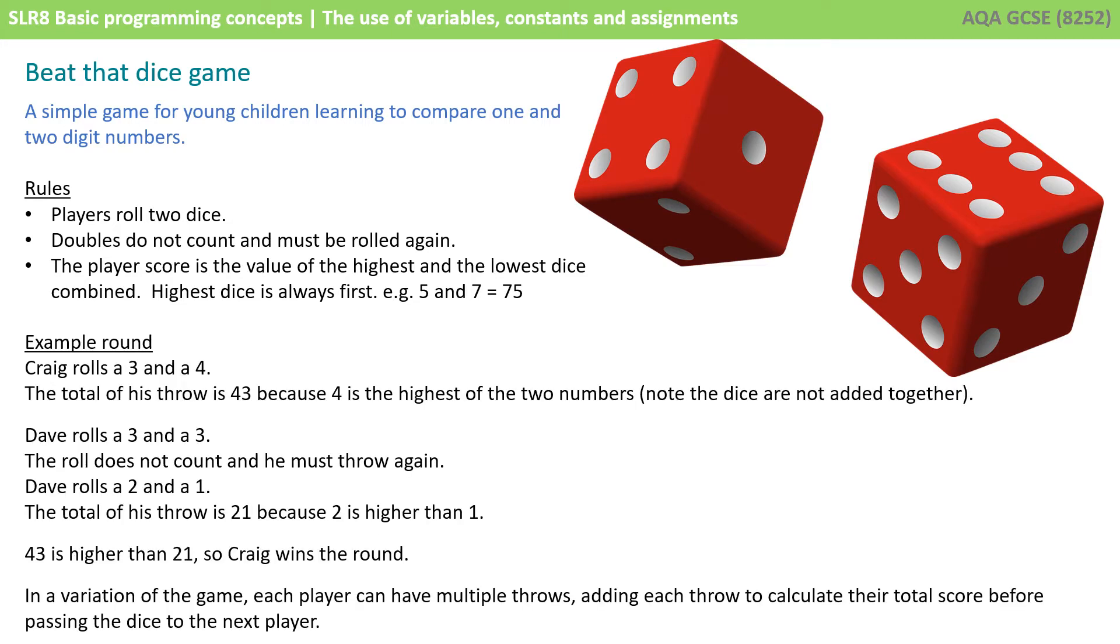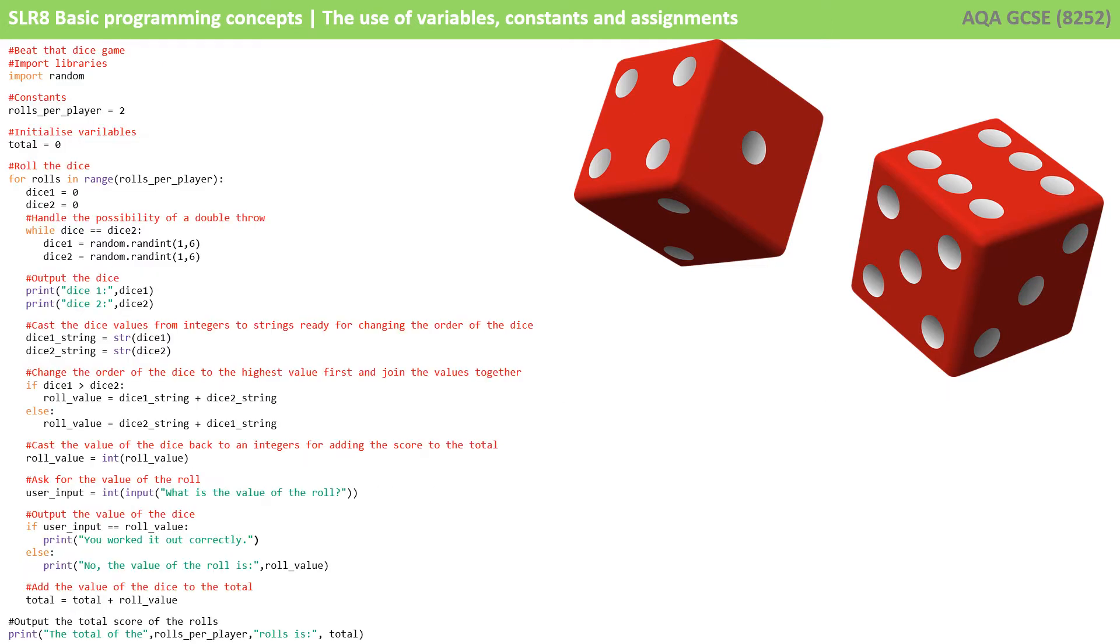So let's just do a quick example round. Craig rolls a three and a four. The total of his throw is 43 because four is the highest of the two numbers. Note the dice are not added together. Dave then rolls a three and a three. The roll doesn't count as it's a double. So he throws again. He rolls two and one. The highest dice goes first. So he gets 21.